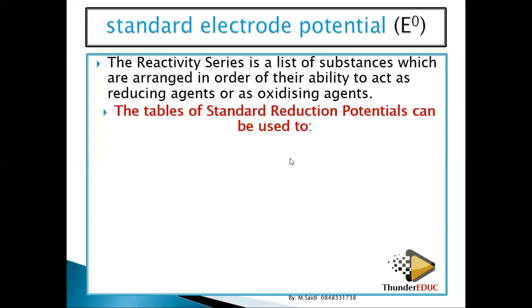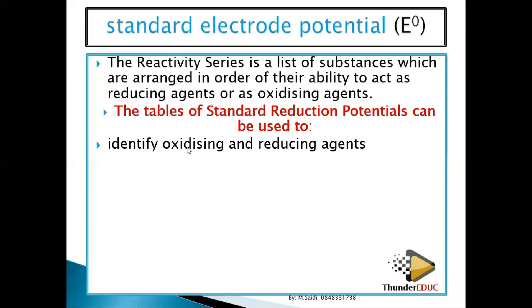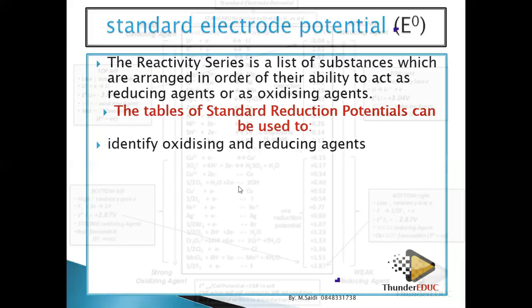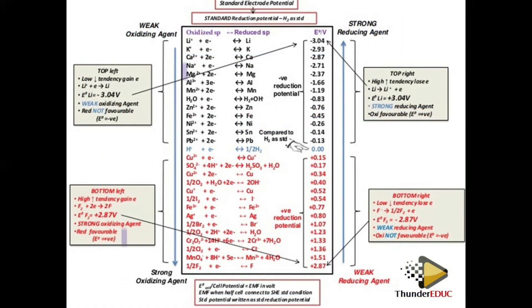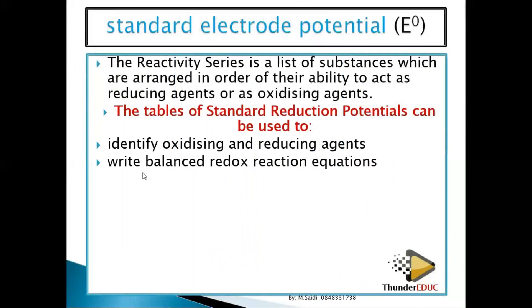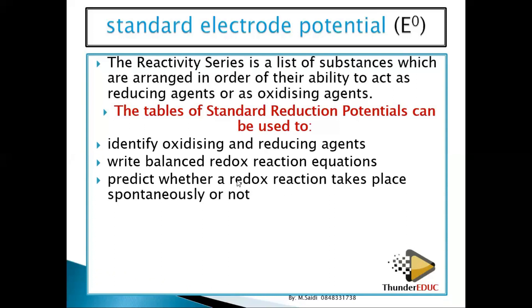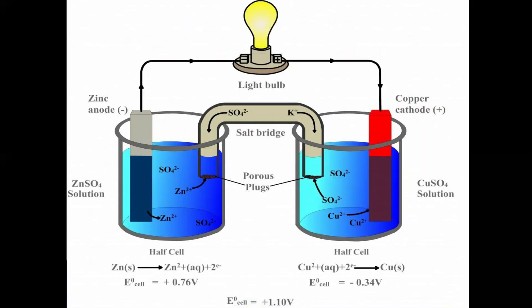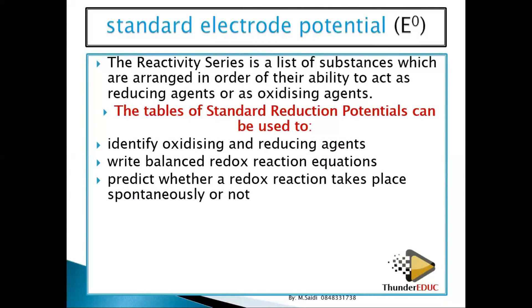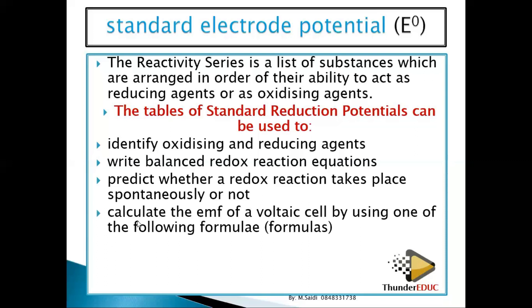A table of standard reduction potential can be used for: number one, identifying the oxidizing and reducing agents — we can know this is a strong reducing agent, this is a strong oxidizing agent; number two, writing a balanced redox reaction equation; and number three, predicting whether a redox reaction is taking place spontaneously or not — meaning it can continue without an external power source.